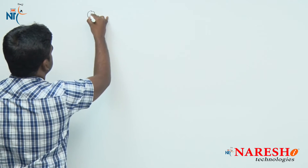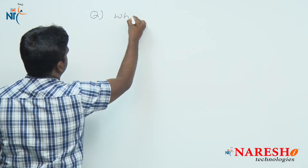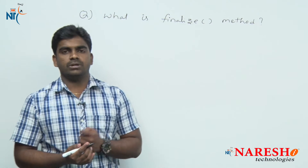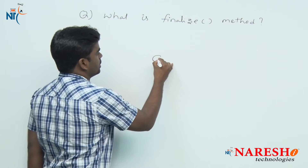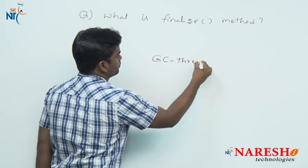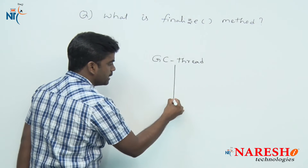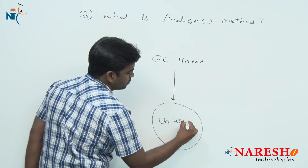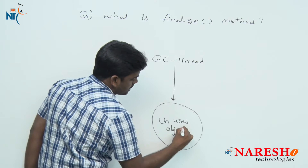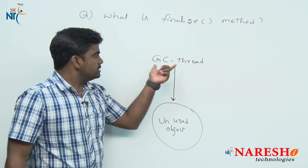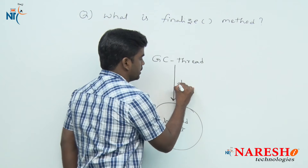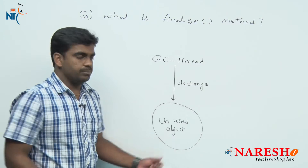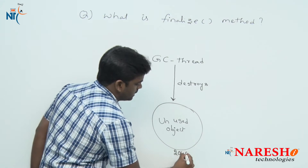That is: what is the finalize method? We know the concept of garbage collection. There is a thread called the garbage collector thread — it will delete unused objects in the heap area. The GC thread will destroy unused objects in the heap area, where objects are created at some location.